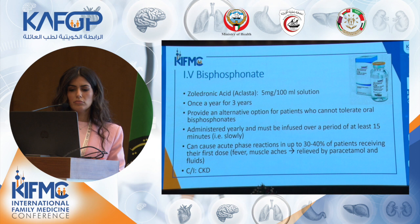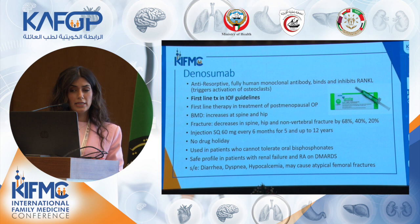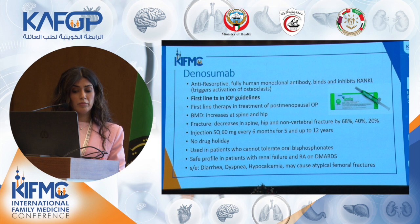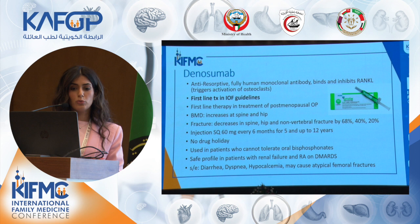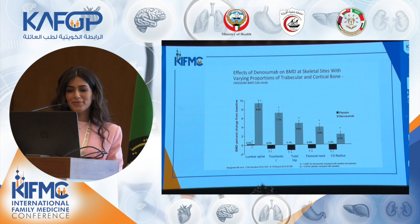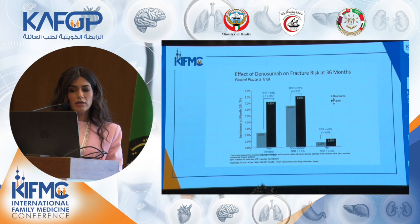Denosumab is a fully human monoclonal antibody that inhibits the action of osteoclasts. It is a promising medication that increases bone mineral density in the hip and the spine and decreases fracture probability in these regions. It is given as a subcutaneous injection every six months, from five to up to 12 years, and there is no drug holiday. This figure from the FREEDOM study shows the effectiveness of denosumab on bone mineral density at specific skeletal sites, decreasing the risk of fracture at 36 months and up to 10 years.